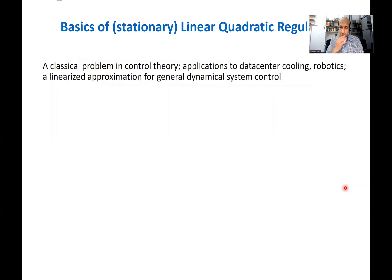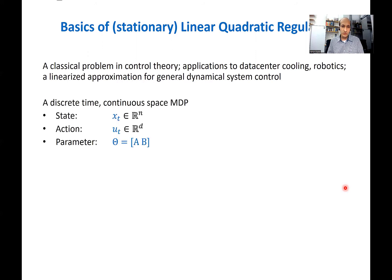I'll begin by briefly covering what the LQR problem is and a classical result from the theory of control of linear dynamical systems. It's the simplest example of continuous space discrete time MDPs. Xt denotes the state at time t, which lives in R to the N. Our controls are denoted by Ut, and they live in R to the M. The MDP itself is parameterized by two matrices, A and B. A is called the dynamics matrix, and B is called the input matrix.